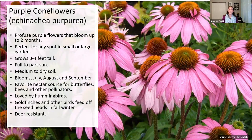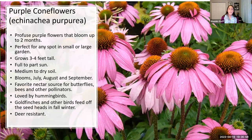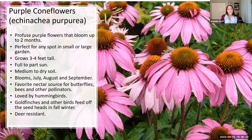Purple coneflower — echinacea — if you've seen it in teas, this is that plant. I think of it as a quintessential prairie plant. It's a little bit taller, getting about three to four feet tall, so it works great as a background layer. It likes full to part sun and tends toward slightly drier soils. These beautiful flowers appear in late summer into early fall. Hummingbirds passing through love it, as do butterflies and bees. The birds will feed on the seed heads in winter, adding a little winter interest to your garden.